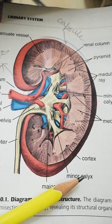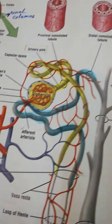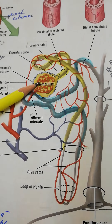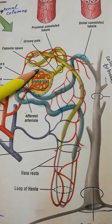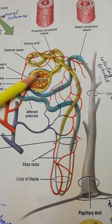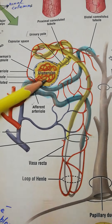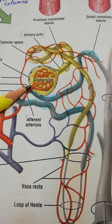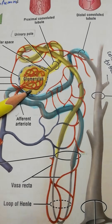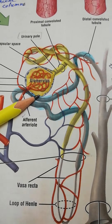Now we concentrate on another figure to check that the cortex contains the convoluted part of the tubules. What we are examining is the structural and functional unit of the kidney called the nephron.